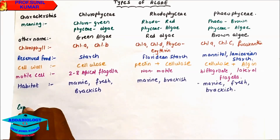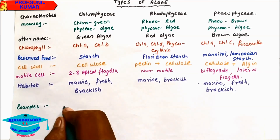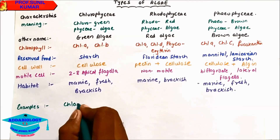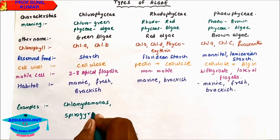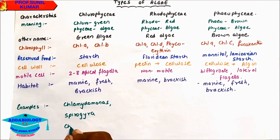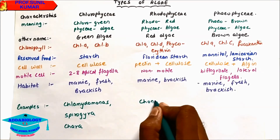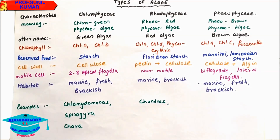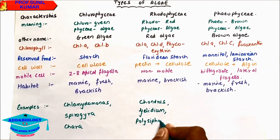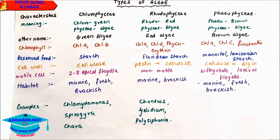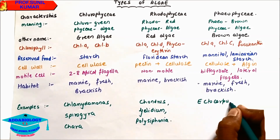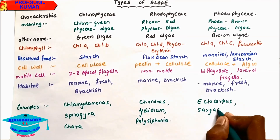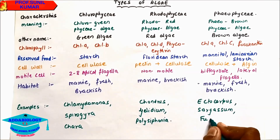Examples of Chlorophyceae: Chlamydomonas, Spirogyra, and Chara. Examples of red algae: Chondrus, Gelidium, and Polysiphonia — red algae is used to prepare agar. Examples of Phaeophyceae: Ectocarpus, Sargassum, and Fucus.